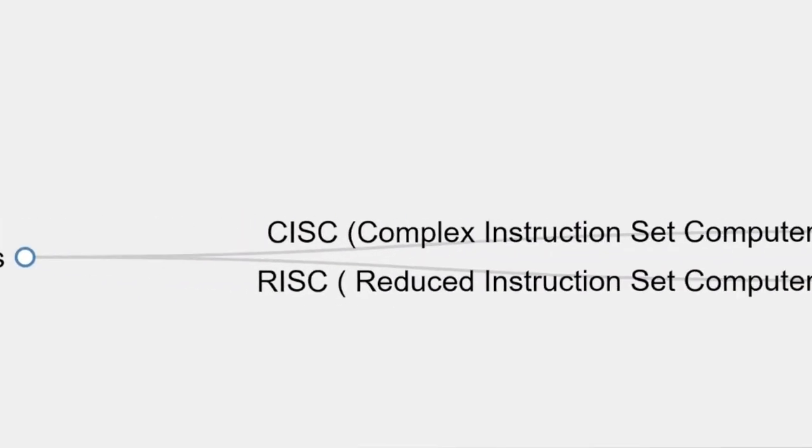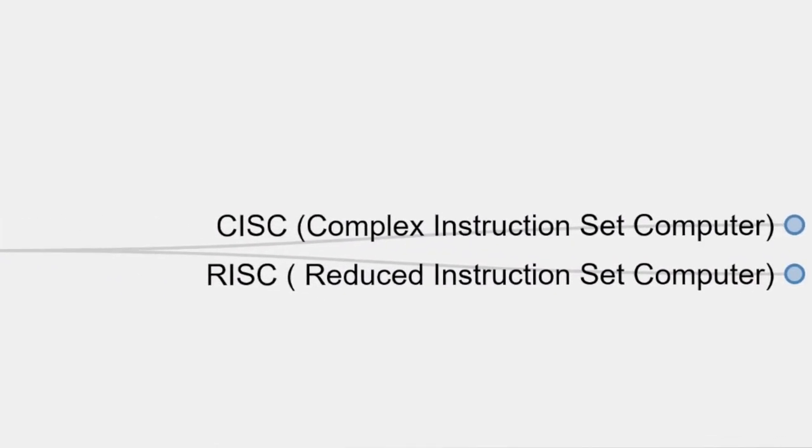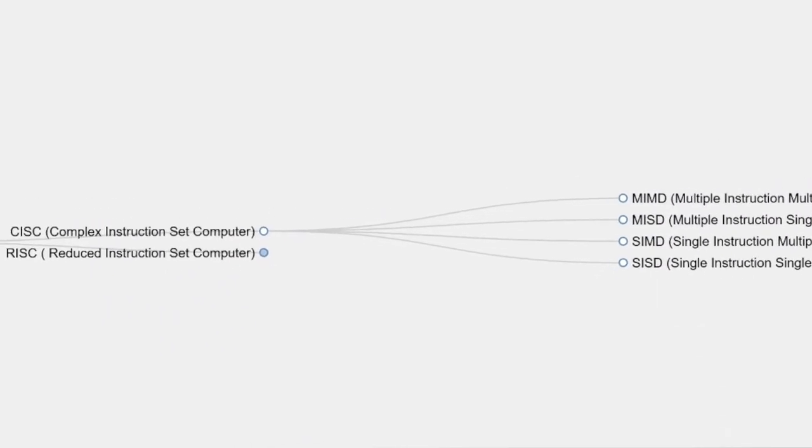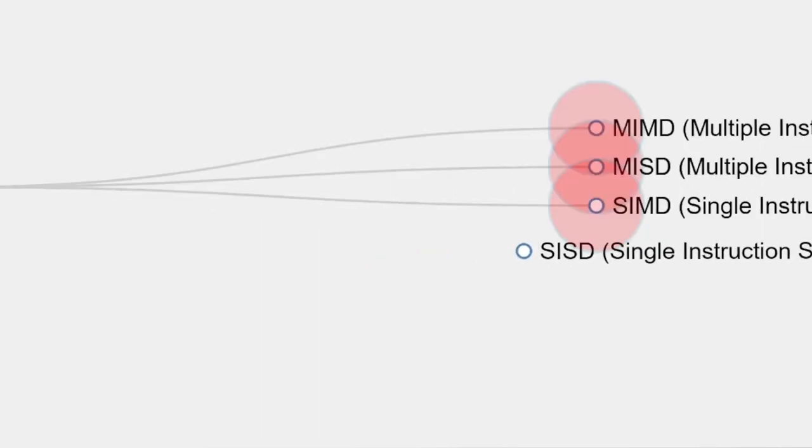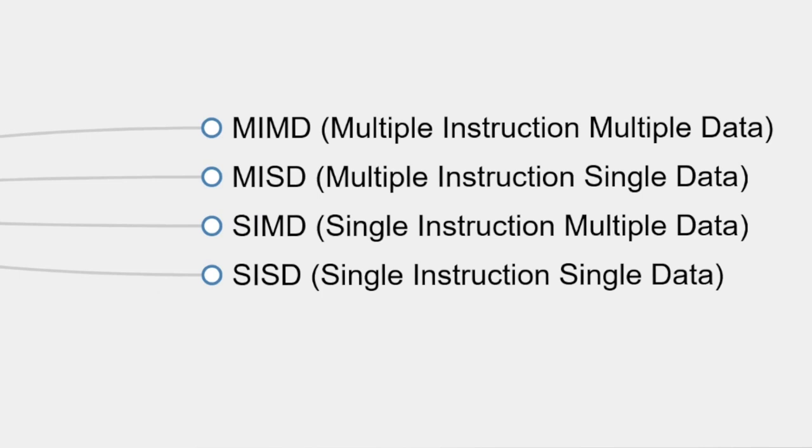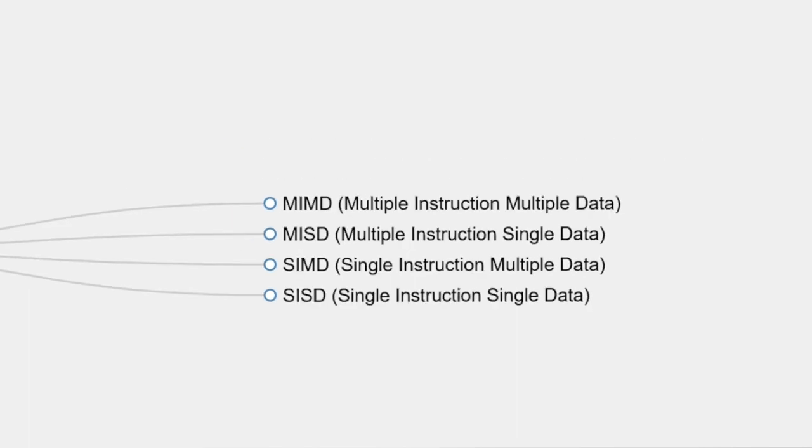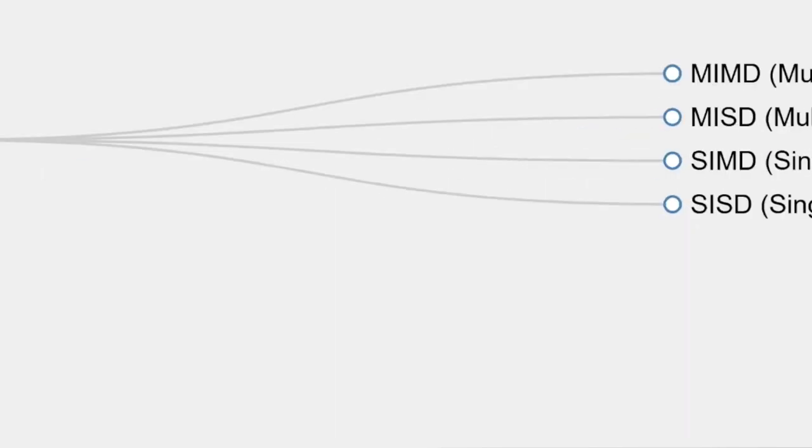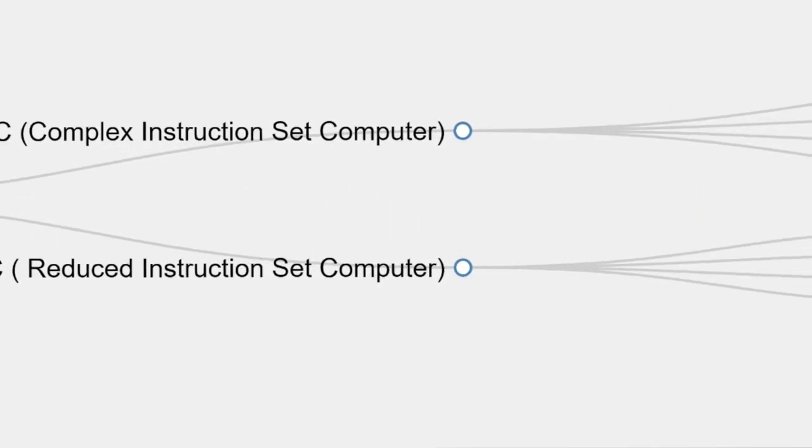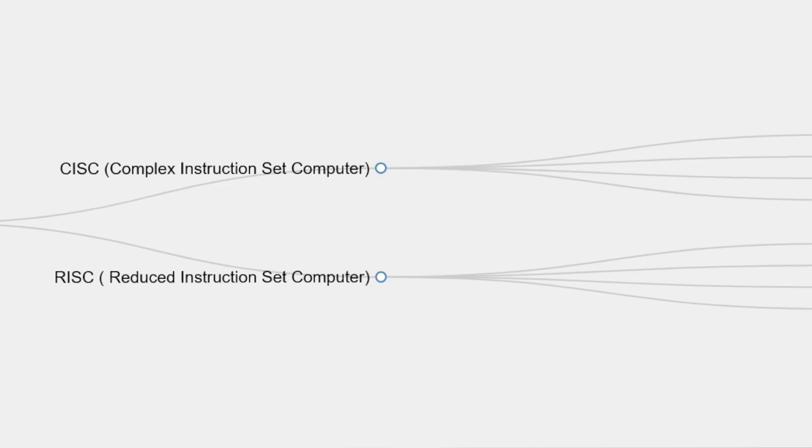So there are two kinds of processors, CISC and RISC, complex instruction set computers, and reduced instruction set computers. Now, CISC itself has four types, four subcategories, MIMD, MISD, SIMD, and SISD. These are similar for RISC as well. Multiple Instruction Multiple Data is MIMD, MISD is Multiple Instruction Single Data, SIMD is Single Instruction Multiple Data, and SISD is Single Instruction Single Data.